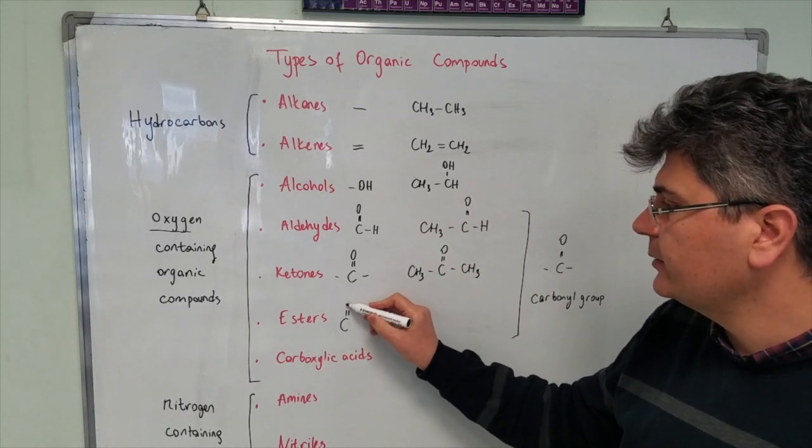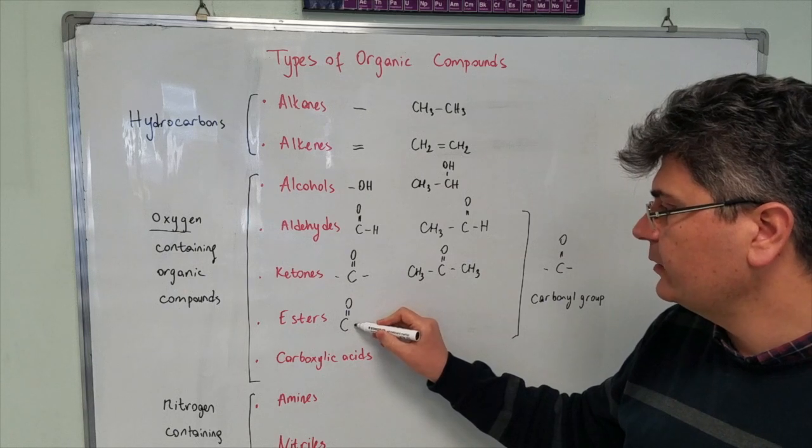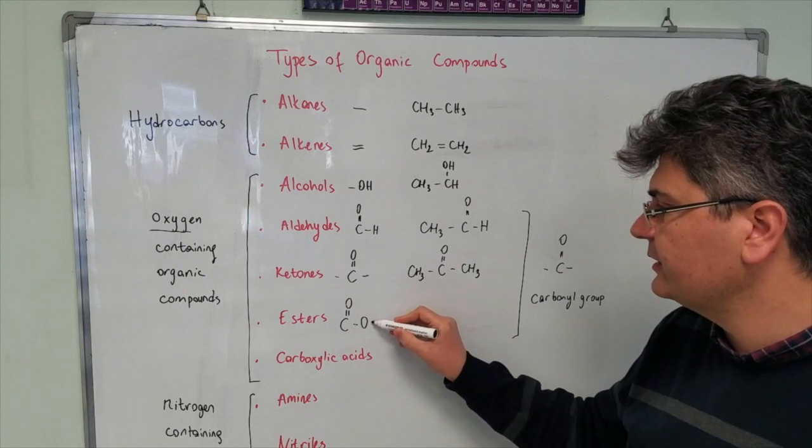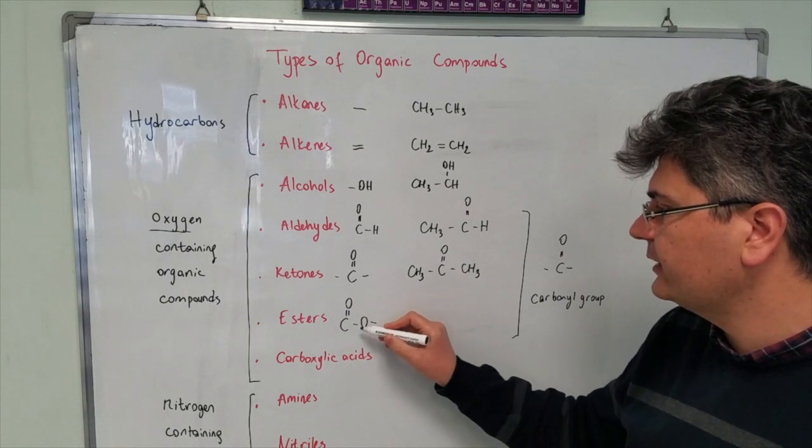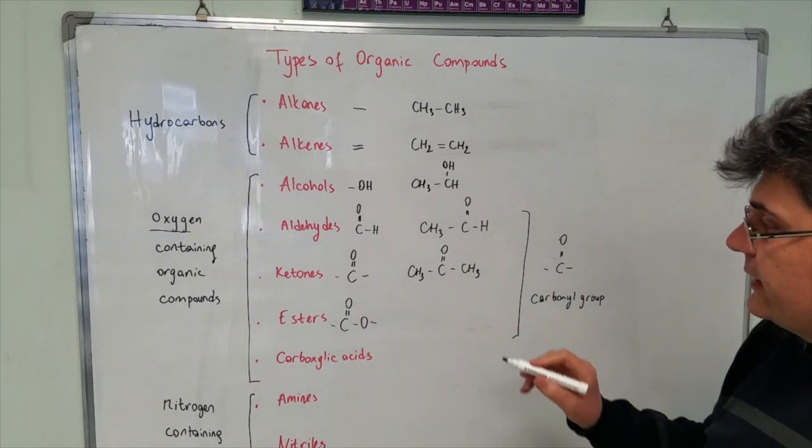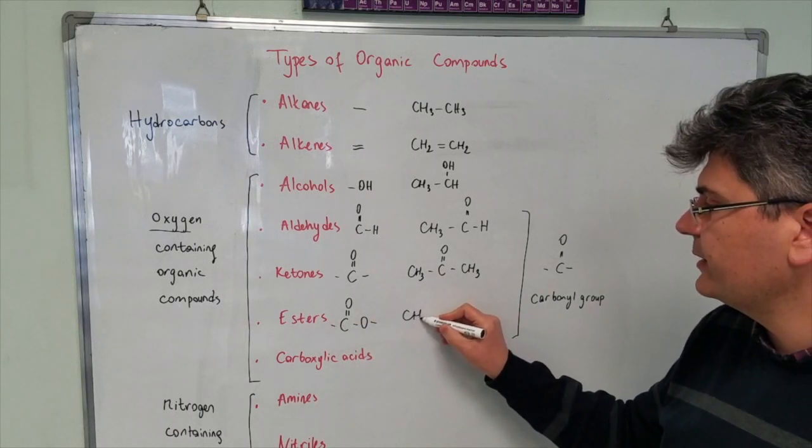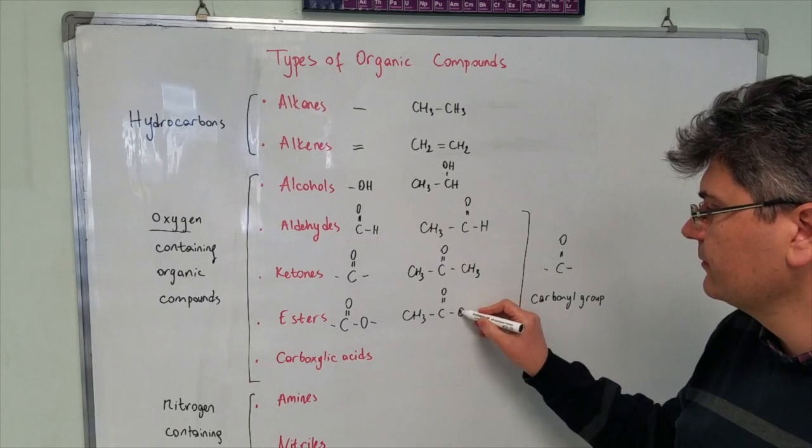Esters contain carbonyl group as well. But along with that, we need to have an oxygen and this oxygen is connected to a radical and this carbon is also connected to a radical. It can be something like this one.